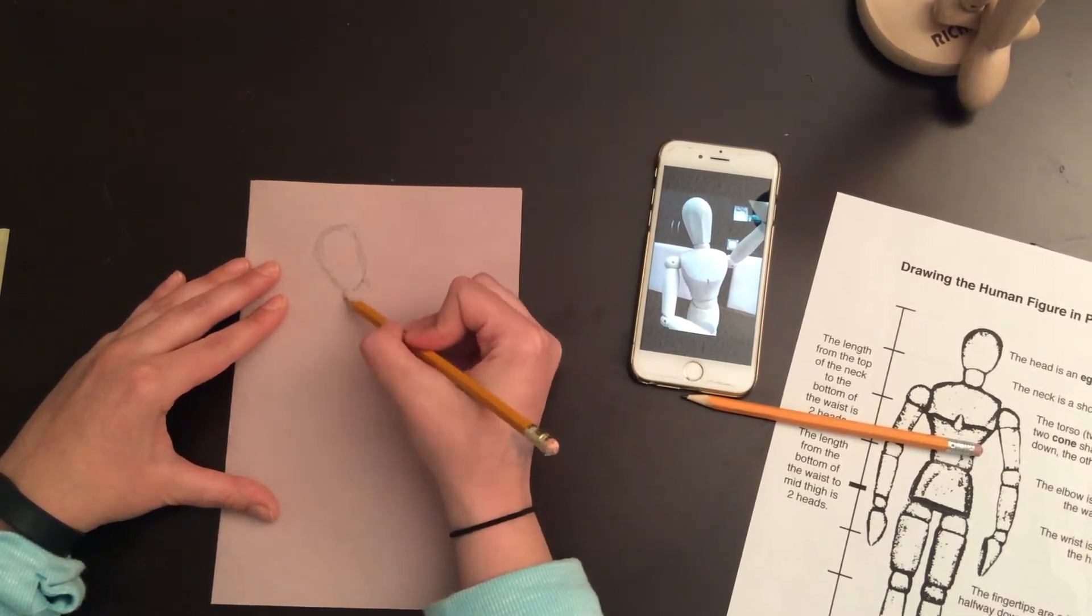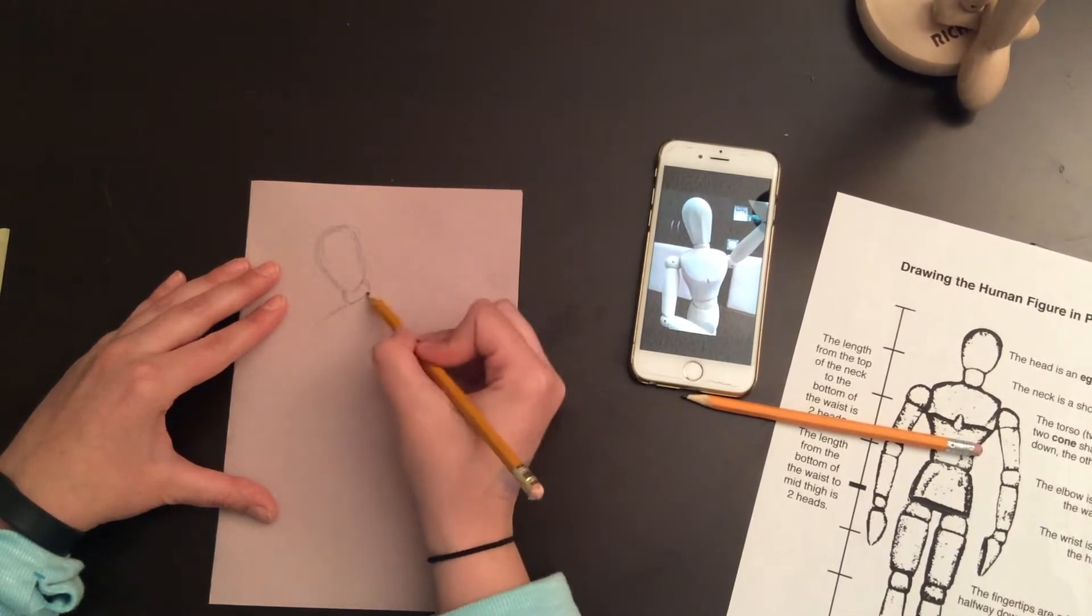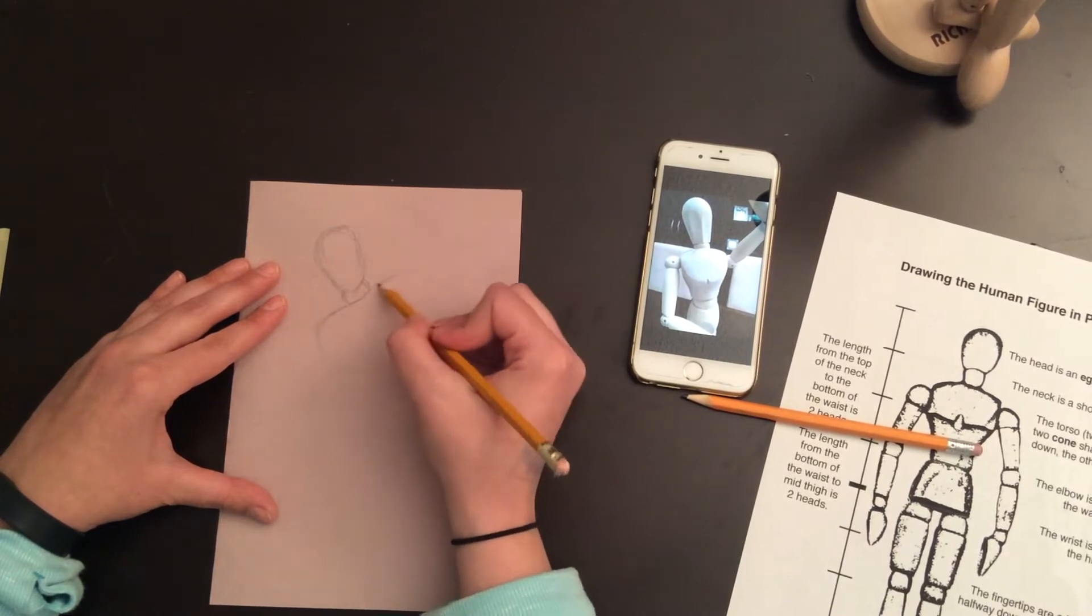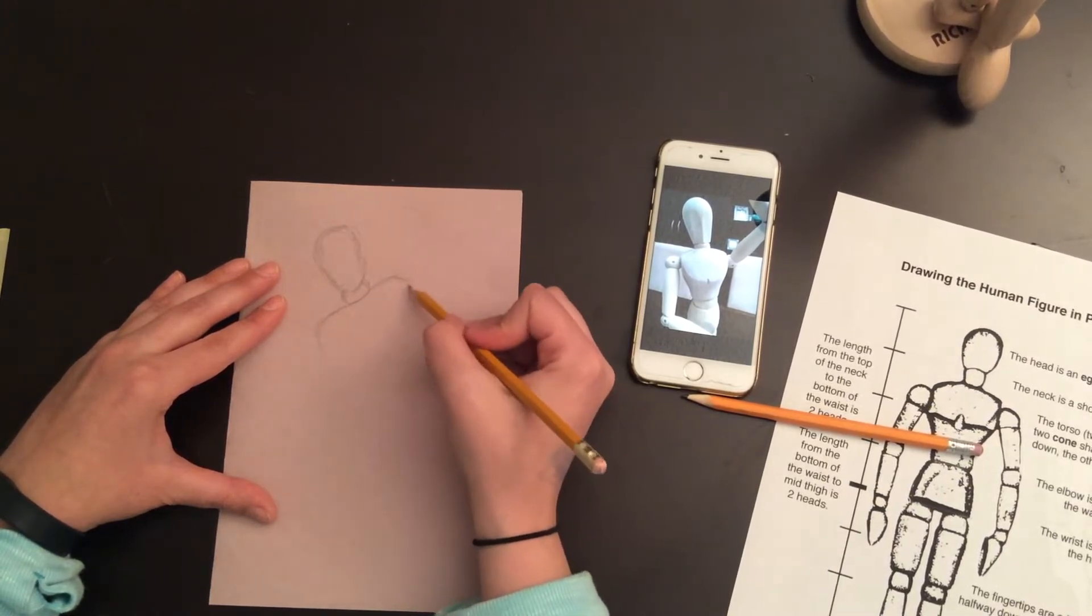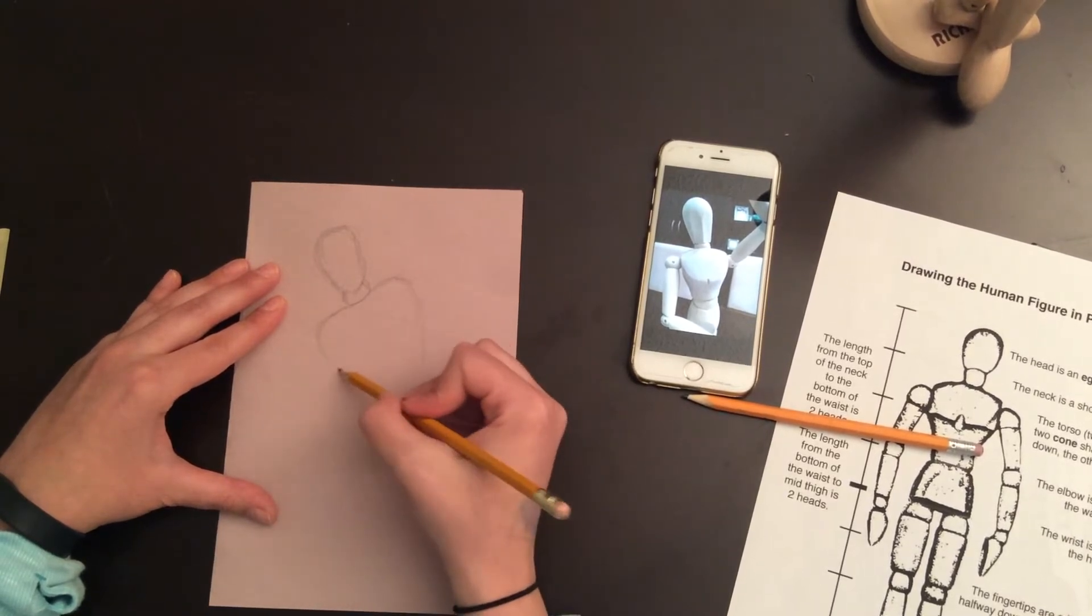I'm going to go ahead and add the cylinder for the neck, create a bit of the torso. Now it's okay if it doesn't look exactly like it does in the photo. We're just doing our best here with this observational drawing.